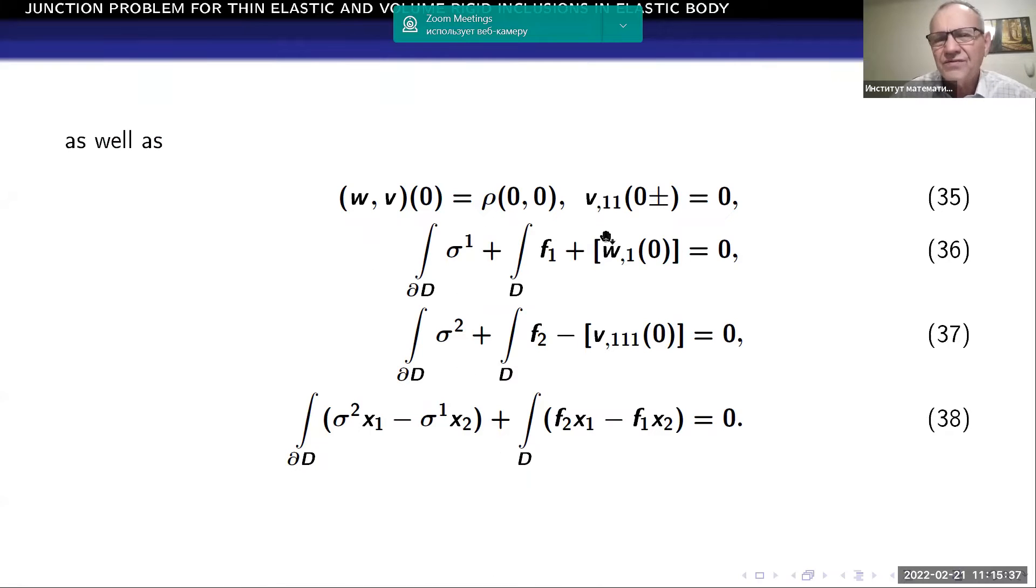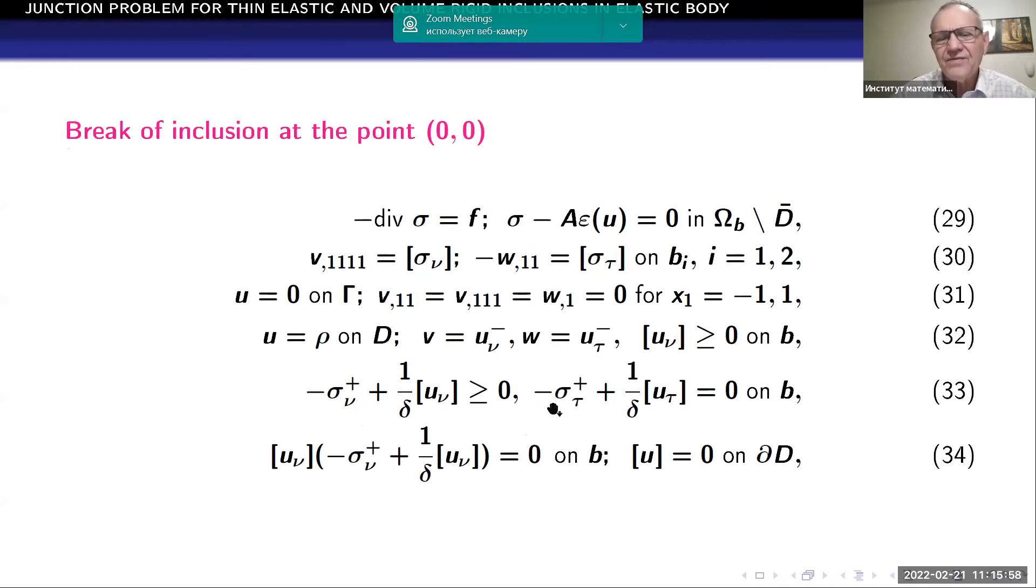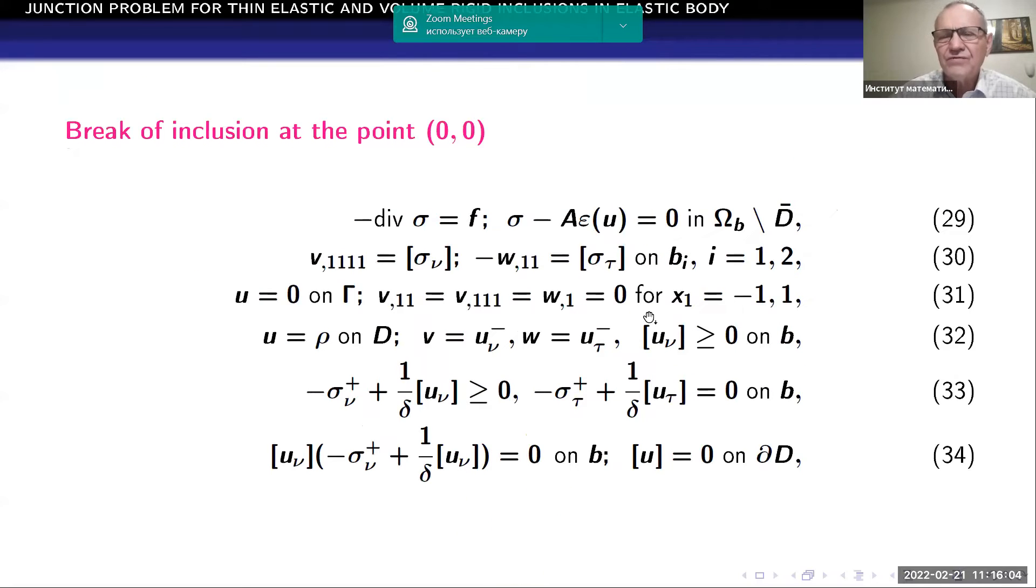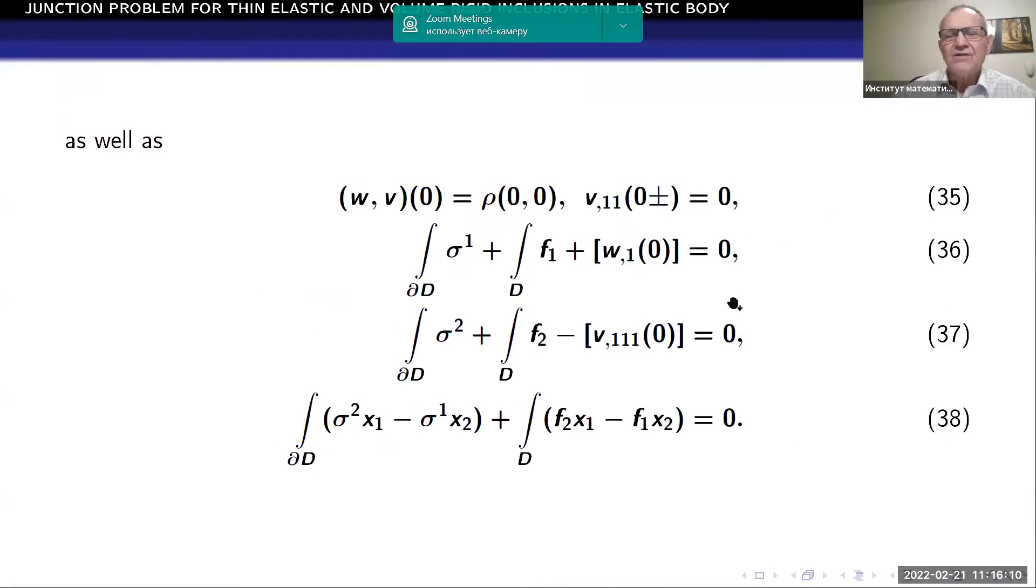Junction conditions would be different. In this case, bending moment, the second derivative of vertical displacement at this point is equal to zero. And the last three relations also has a different point compared to the previous one. So if we have a break between B1 and B2, problem formulation would be different. And this problem formulation is presented in this slide. So for all passages to limit are justified and we know how to formulate limit problems.